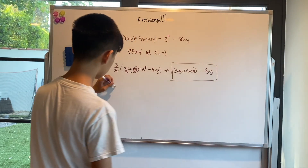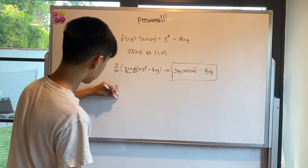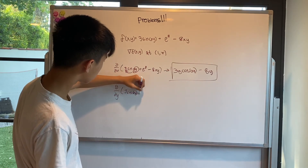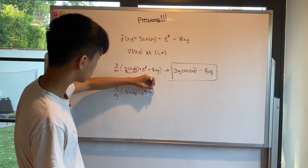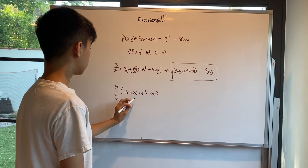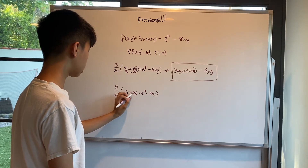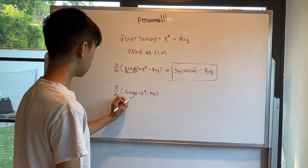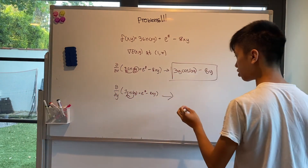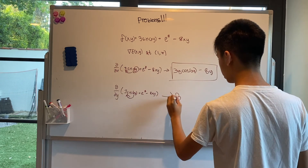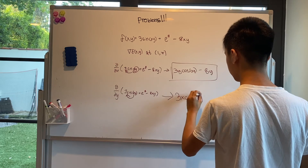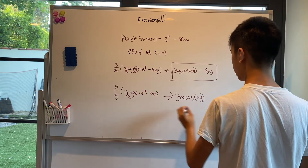Now let's find the partial derivative with respect to y. Again, x is treated like a constant, so it travels to the outside. So we end up getting 3x·cos(xy). And e⁸ is still a constant.